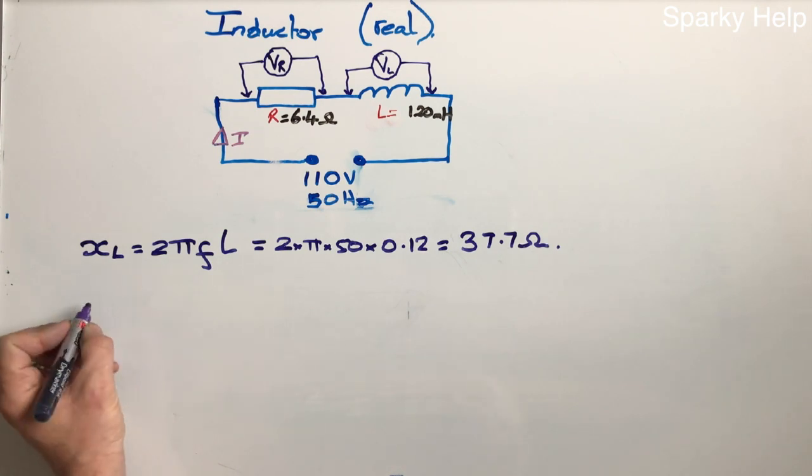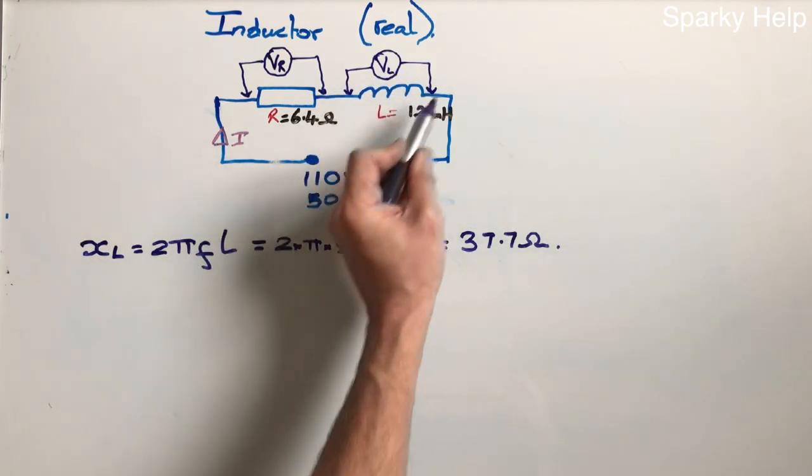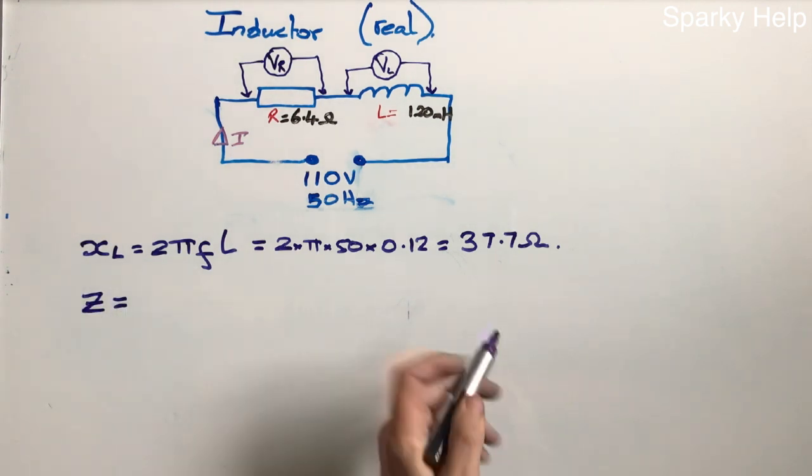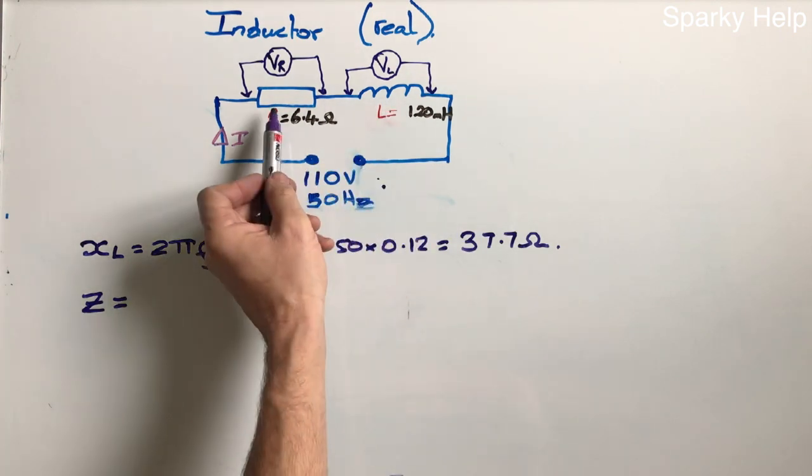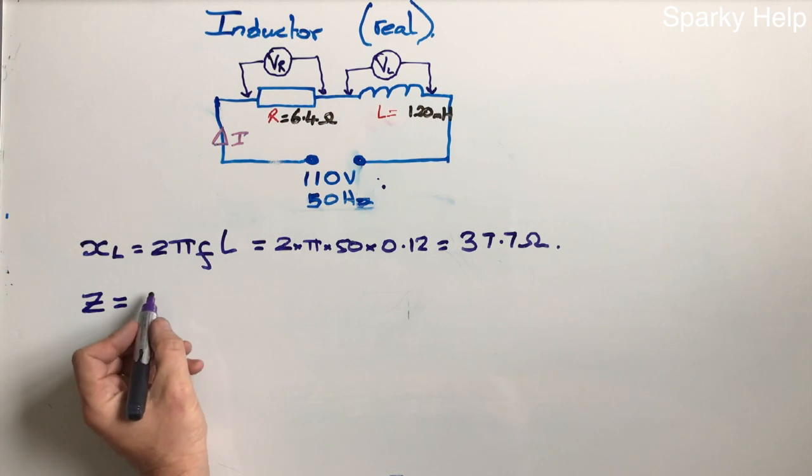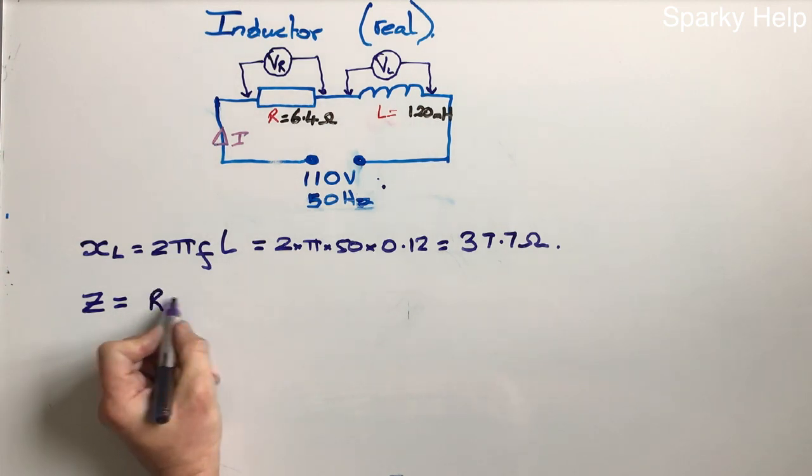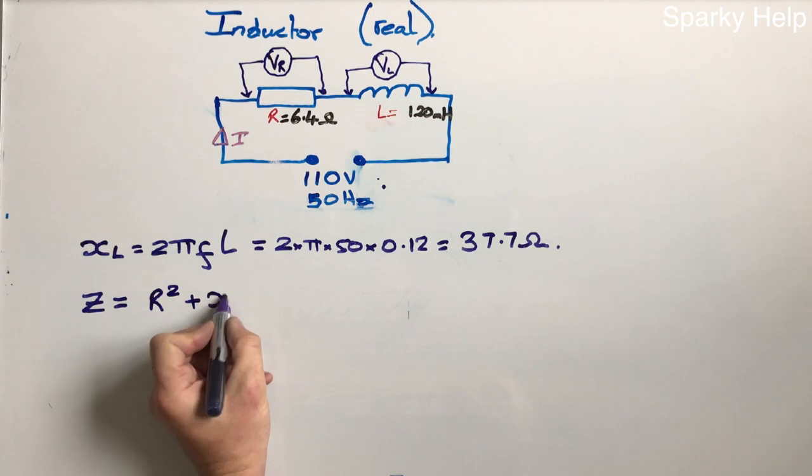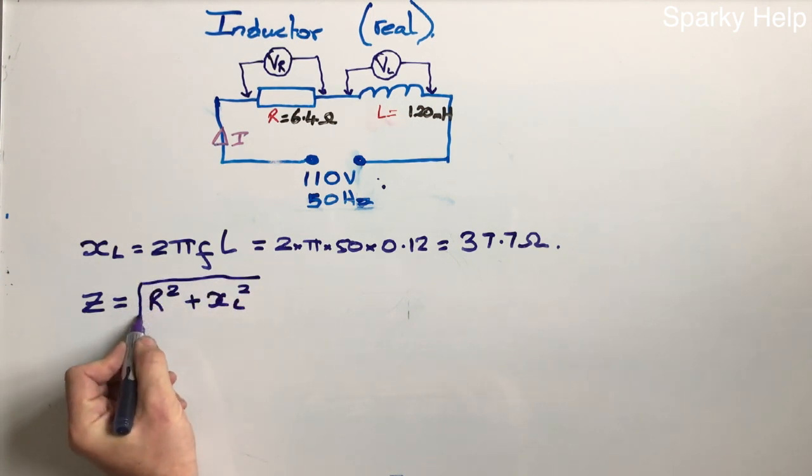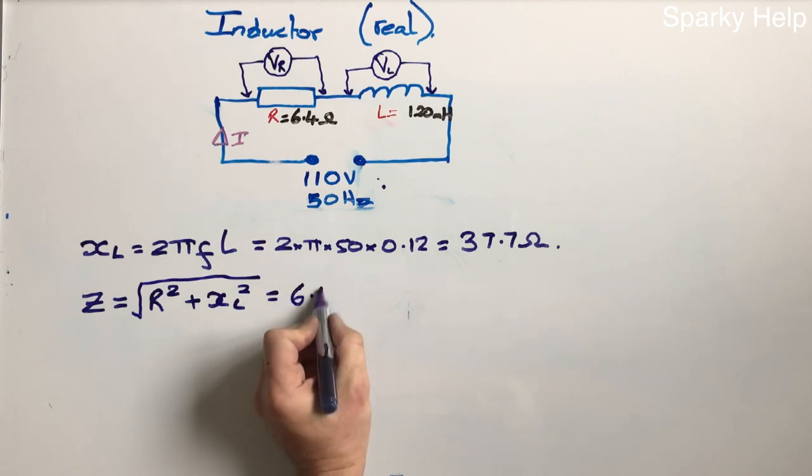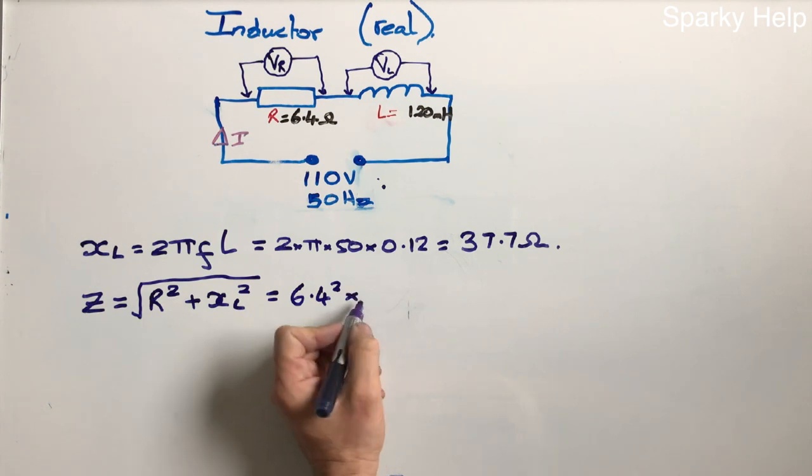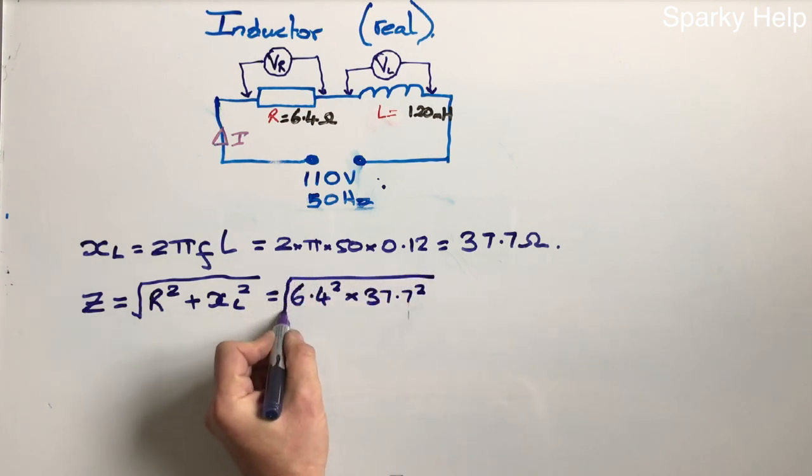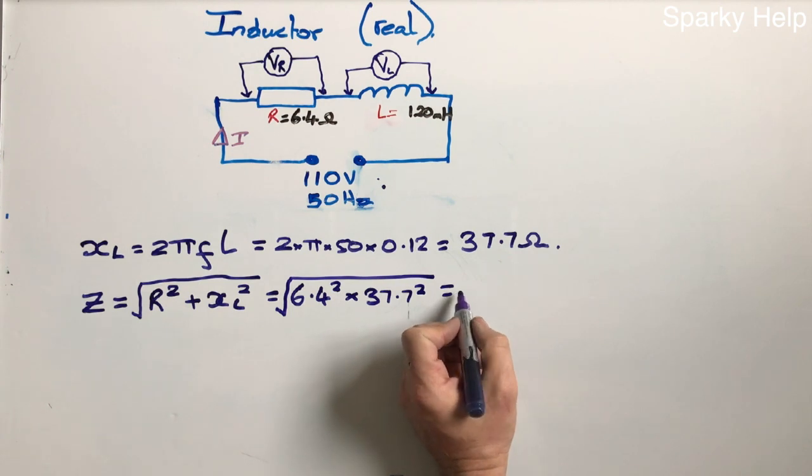So now we can work out the impedance. The impedance includes this, which is the ohmic value of that part and the resistance of that. Now that is given Z, and these are now out of phase. This is out of phase by 90 degrees. Therefore, you can't literally add them up as you would do normally. Pythagoras comes into play, which is R squared, and XL squared, square root those. If we put those figures in, 6.4 squared times 37.7, and we square those and square root your answer, we will now get impedance.